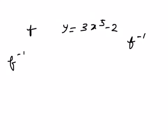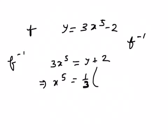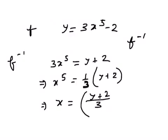So I have to again change the subject. 3x to the power 5 equals y plus 2. x to the power 5 is one third times y plus 2. And of course, x will be, you can write it like that, to the one fifth. That's the inverse function.